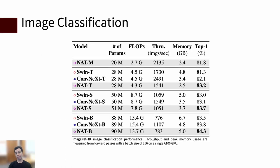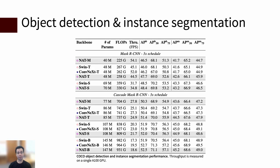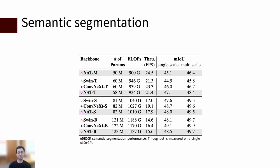On to the experiments, starting with classification, where we see NAT outperform not only SWIN, but also ConvNeXt, a relatively new CNN baseline. In object detection and instance segmentation, again, we see a performance improvement across scales over SWIN, specifically when using cascaded mask RCNN. And in semantic segmentation, we again see improved performance over SWIN.